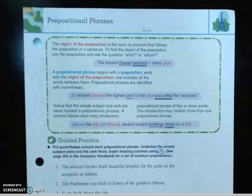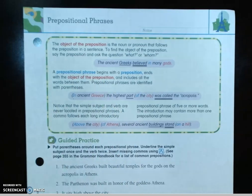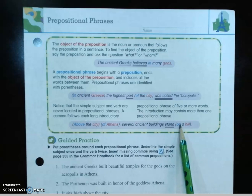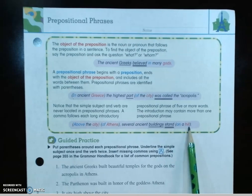The next sentence has three prepositional phrases in just one sentence. 'Above the city' — above is the preposition, above what? City. 'Of Athens' — of is the preposition, of what? Athens. Athens is the object of the preposition, marked in red. The objects of prepositions are written in red, and the prepositions are in blue. 'On a hill' — on is the preposition, on what? Hill. Hill is the object of preposition, and the whole prepositional phrase is 'on a hill.'